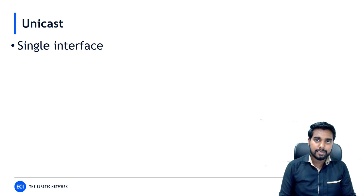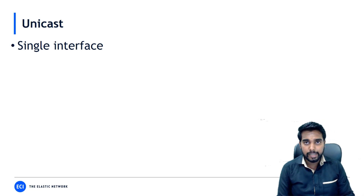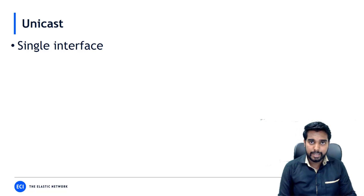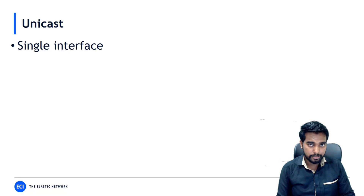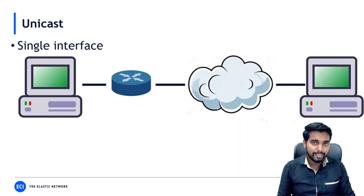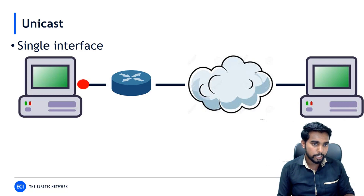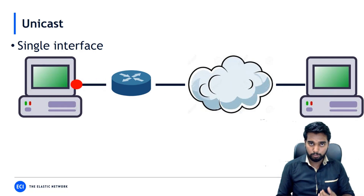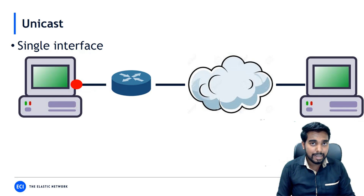Let's discuss in depth about unicast addresses, or more specifically IPv6 unicast addresses. It is one-to-one communication, via a single interface in most cases — one interface to one interface, one host to one host. That's a unicast address.